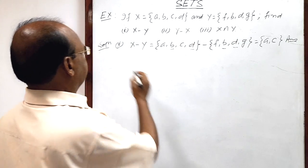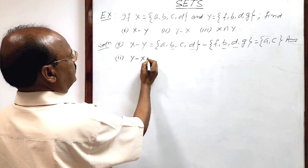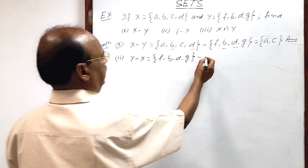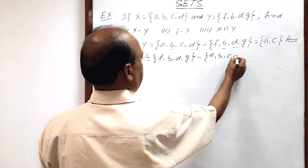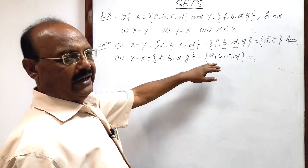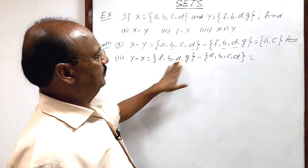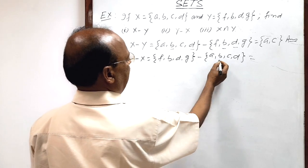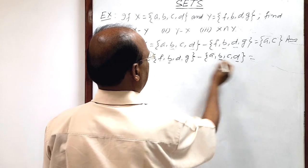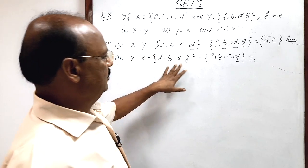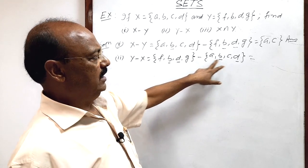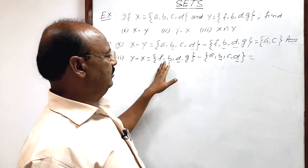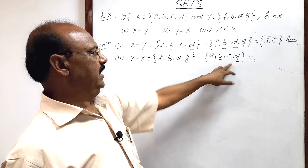For the second part, we have to find Y minus X. Set Y has elements f, b, d, g, minus set X which has elements a, b, c, d. Here also, we remove the common elements from set Y. B is available in both sets, so b is removed. D is also available, so d is removed. It does not matter that a or c are in X but not in Y — we only remove the common elements from Y.